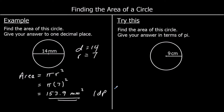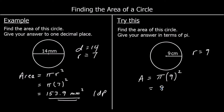We're told the radius is 9 centimeters. The area is pi times the radius squared, so pi times 9 squared. 9 squared is 81, so pi times 81, which we can write as 81 pi. And it's in centimeters squared.